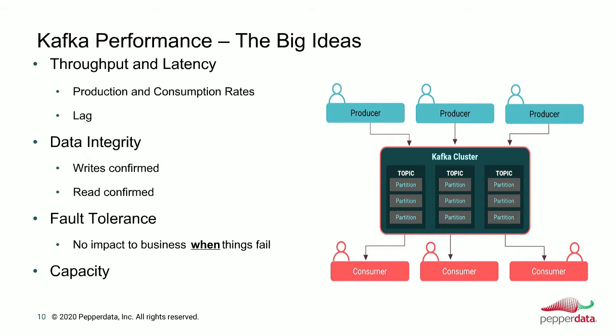There's also the idea of lag — how far are consumers behind producers? The consumption lag is a very important component to monitor. It's typical in a Kafka environment to have fluctuations in data rates, and understanding what is normal versus abnormal is another point you'll want to keep track of when looking at trends.